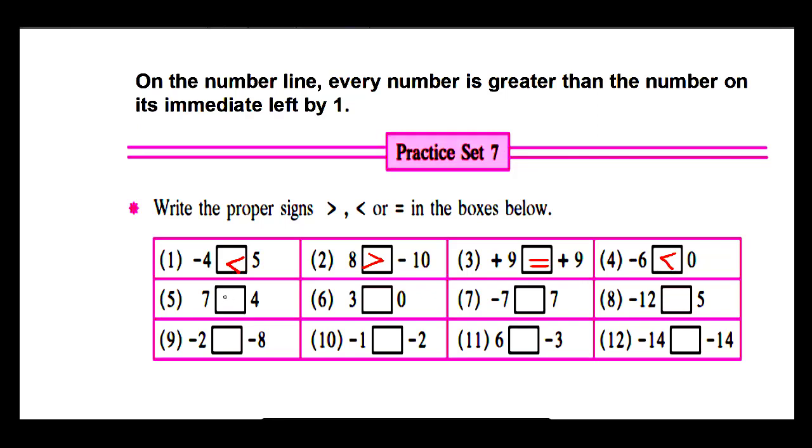Example 5: 7 and 4. 7 is greater than 4. Example 6: 3 and 0. 3 is greater than 0.